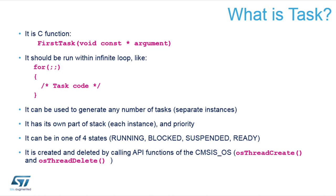Each task has its own stack, priority state where it can reside. It is created by a function OS thread create and it's deleted if you call OS thread delete. Which means if you have a task for one purpose, you can instantiate it, it gets executed and it can delete itself. When all the initialization is finished, why should I keep it in the memory and in the lists? I just remove it and it's never scheduled again.